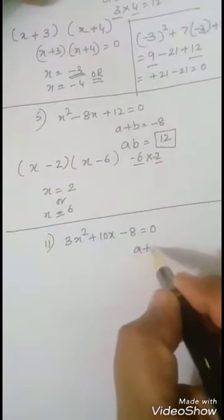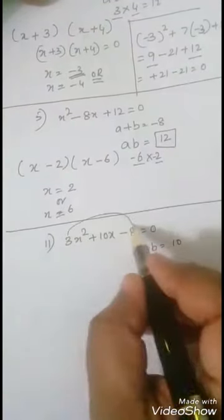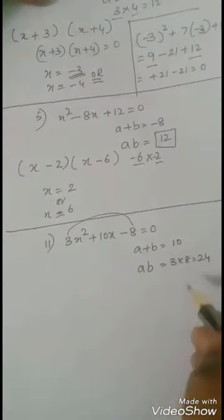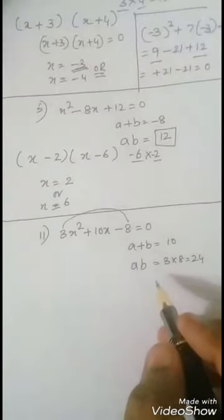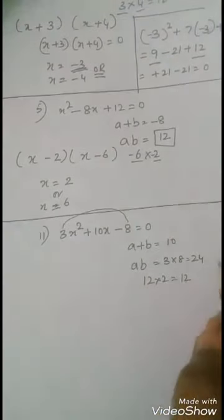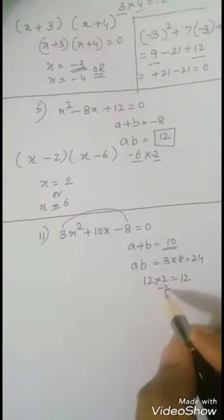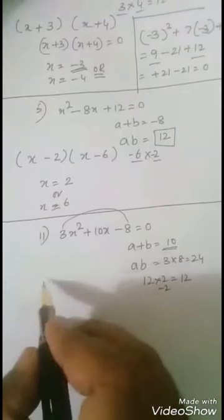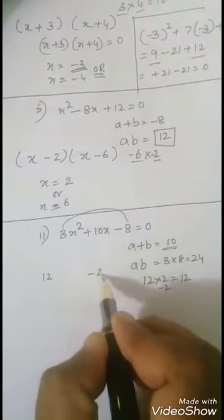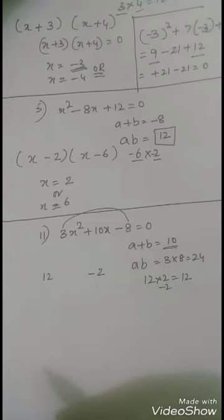3x² + 10x - 8 = 0. I want the answer directly. Here a + b = 10 and a × b = 3 × 8 = 24. How to get this 24? 12 × 2 = 24, but I want 10, so that means positive 12 and negative 2.